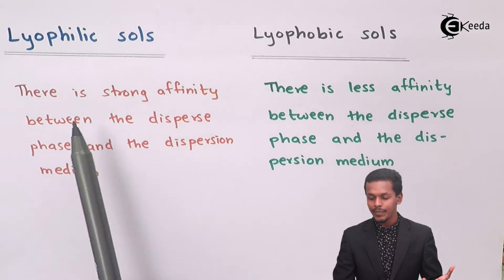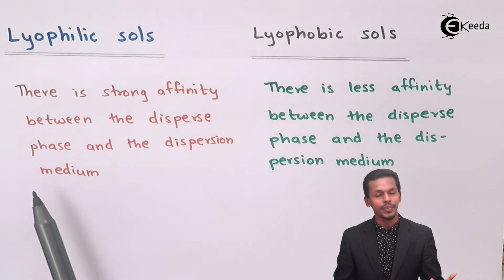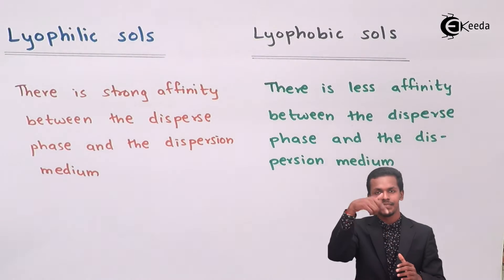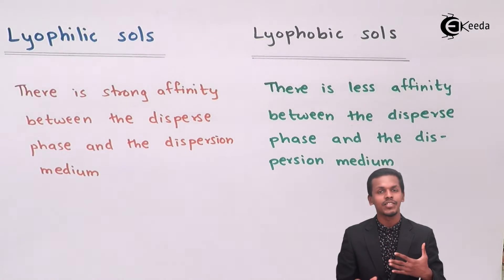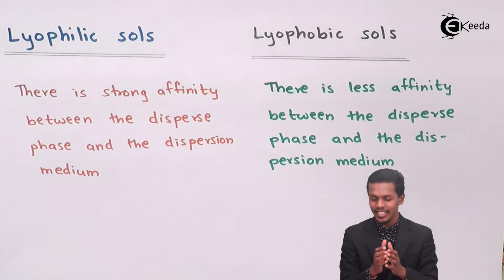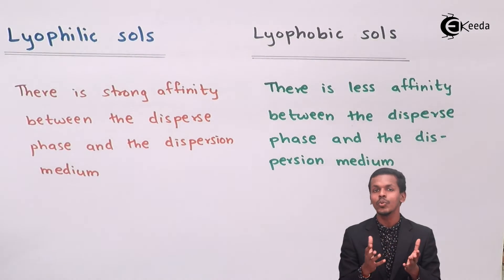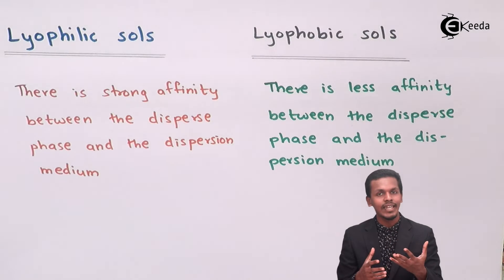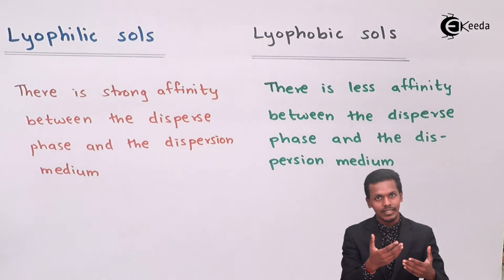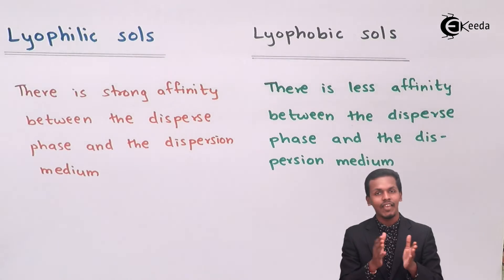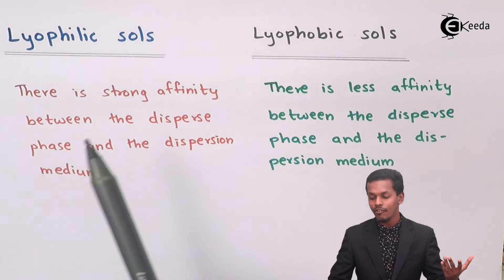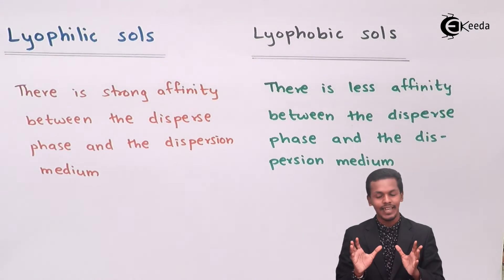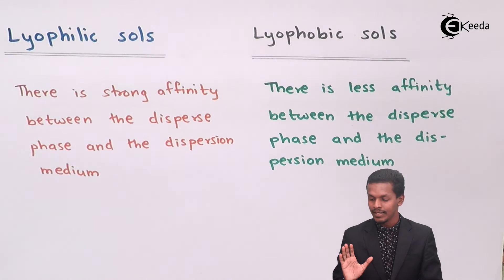For lyophilic sols, there is a strong affinity between the dispersed phase and the dispersion medium. A sol is part of a colloidal dispersion system where the dispersion medium and dispersed phase interact with each other. In lyophilic sols, the dispersed phase and dispersed medium have a very strong affinity towards each other. In lyophobic sols, there is less affinity between the dispersed phase and the dispersion medium.